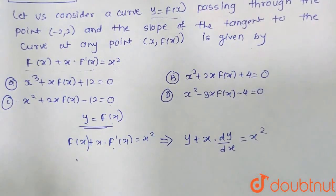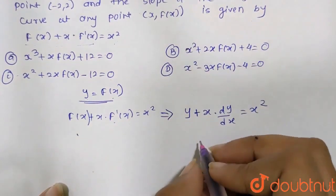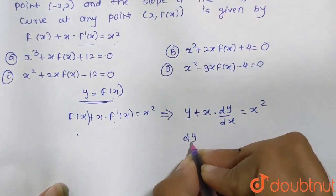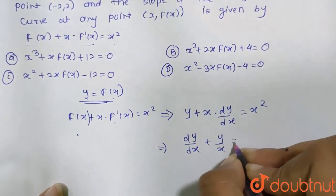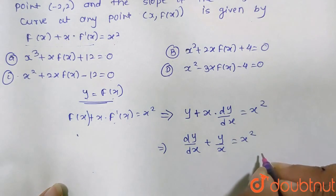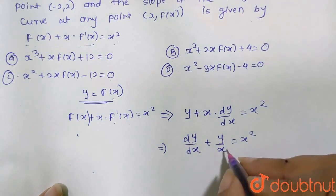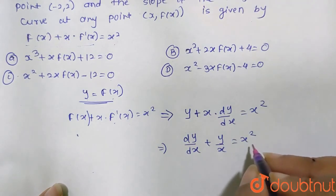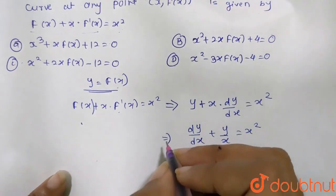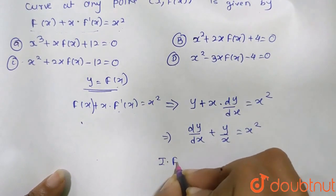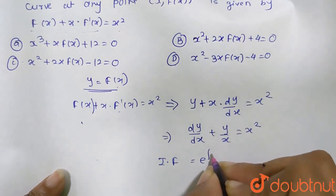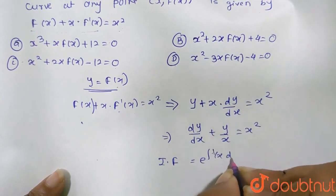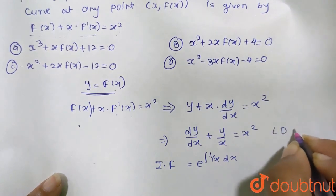Dividing through by x, we get dy/dx + y/x = x. This is now a linear differential equation of the standard form.